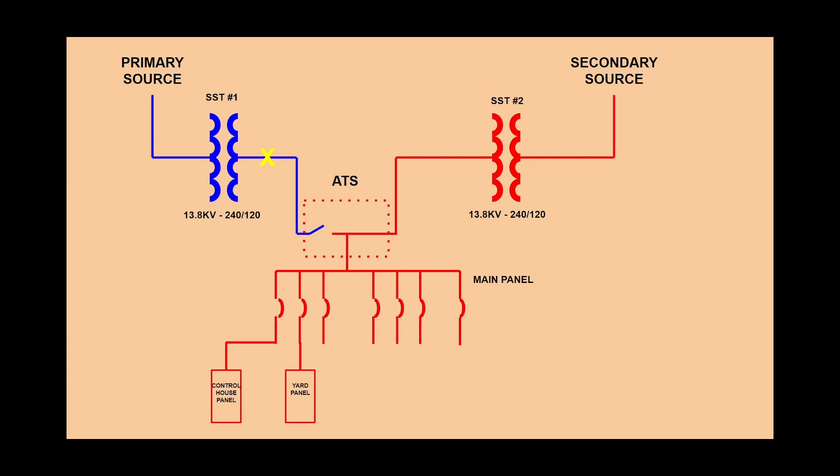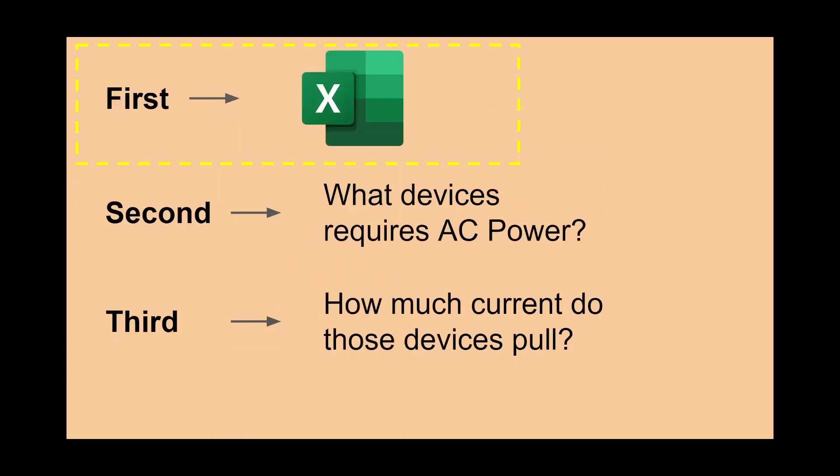So to answer the question what you're going to need to perform the AC Calc. First you're going to need that template spreadsheet. Second you will need to know all devices that need AC power in your substation. Third you will need to know how much current each device pulls. You can find the values of these devices on their manufacturer's websites. Once again more than likely someone has a completed AC Calc that you can refer to as a go by.